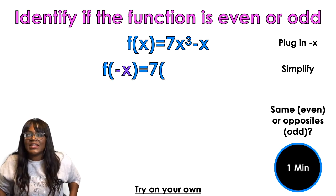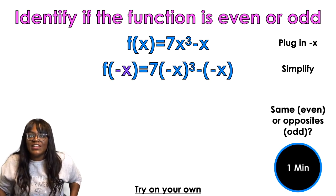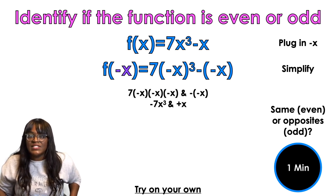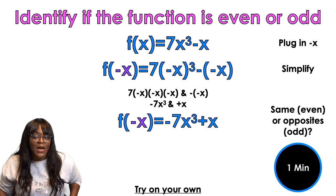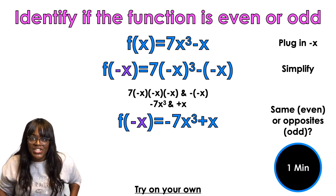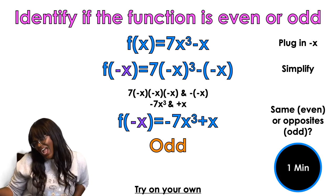So we're gonna do 7 negative 3, negative x, negative x, negative x. So 3 negatives make a negative. And then I had negative, negative x. That's gonna make a positive. So the 7x cubed was positive. Now it's negative. The negative x was negative. Now it's positive. Both signs changed. Everything changed. So is it opposites? That's gonna be odd.